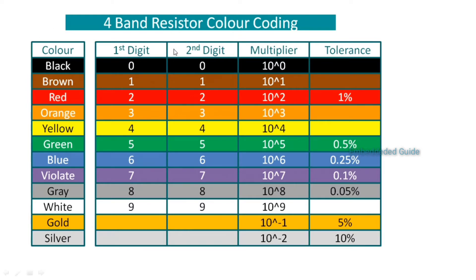We can see the values of the color bands — the first and second color band values are digit values, the next column is the multiplier, and the third color band represents the multiplier value. The next column is the tolerance. So for each color, the multiplying factor and the tolerance value are the two parameters that change.